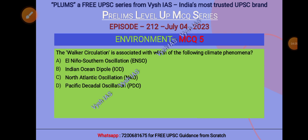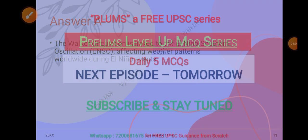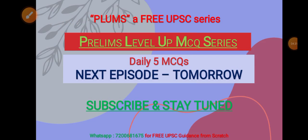and D) Pacific Decadal Oscillation (PDO). The answer is A, El Niño-Southern Oscillation. The Walker Circulation is linked to ENSO, affecting weather patterns worldwide during El Niño events. With this, we've completed today's MCQs, and we'll be back with another set of five good MCQs for you.